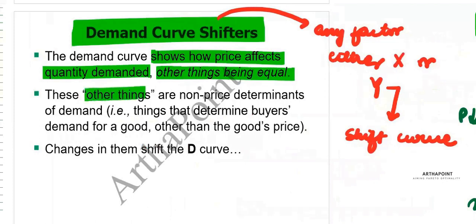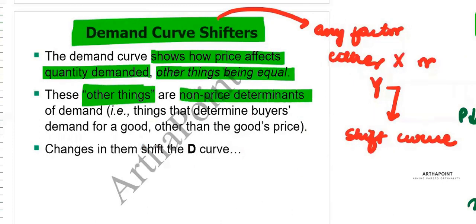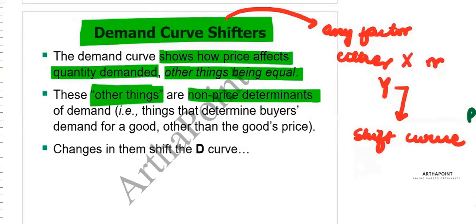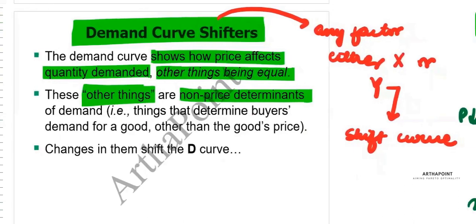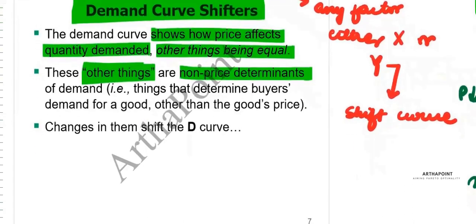The demand curve shows how prices affect quantity demanded, other things being equal. These other things — the non-price factors — are going to shift the demand curve when you change them.